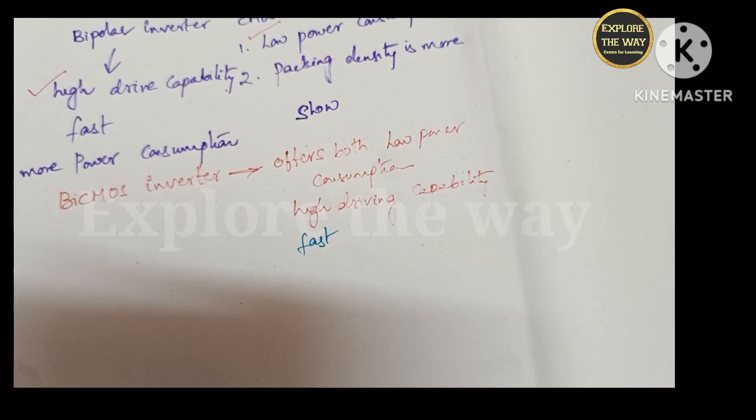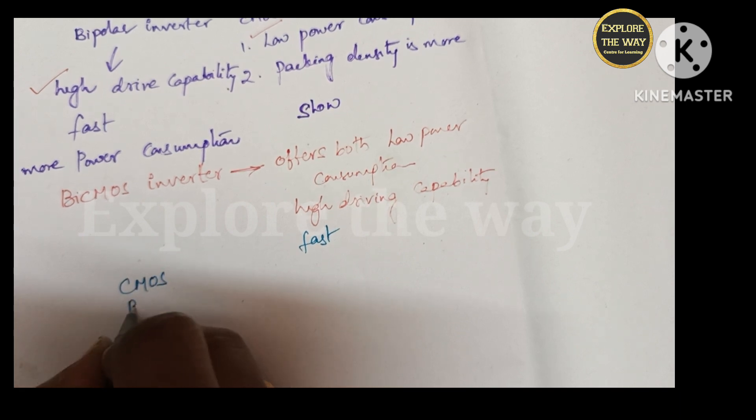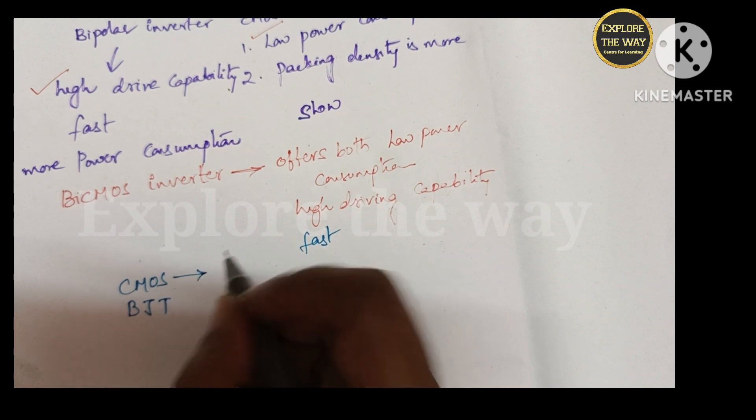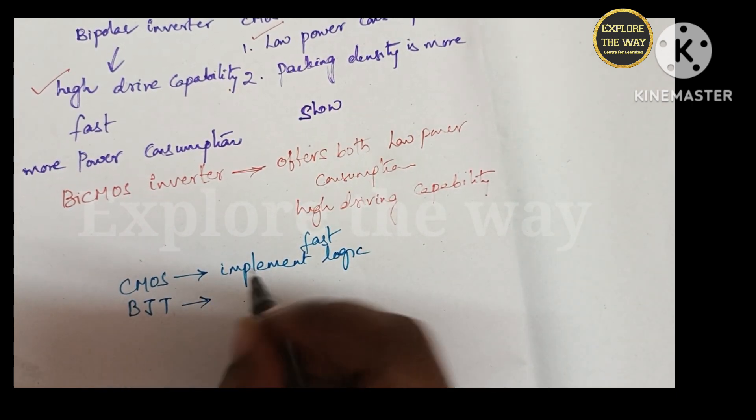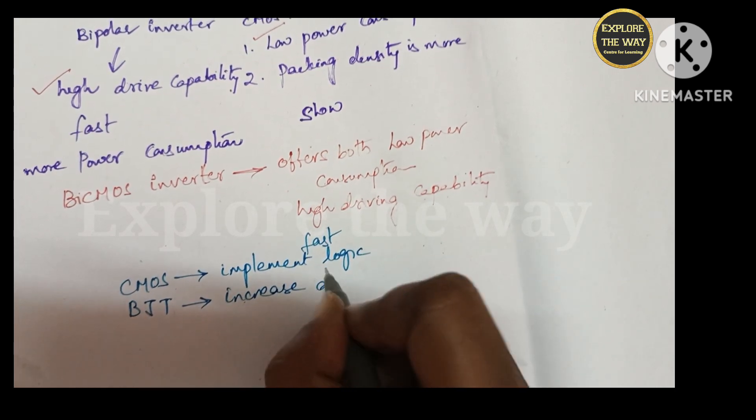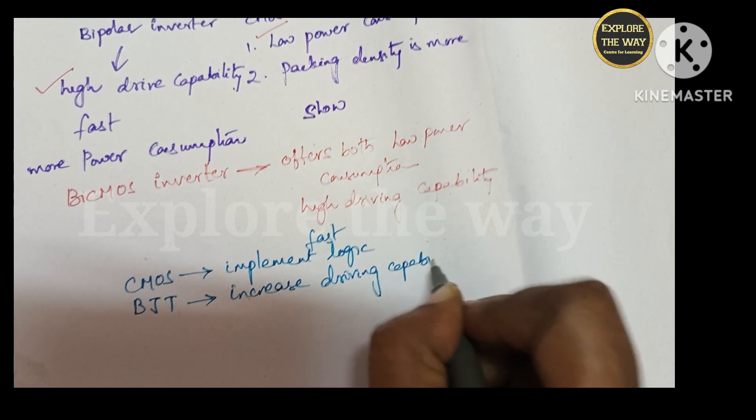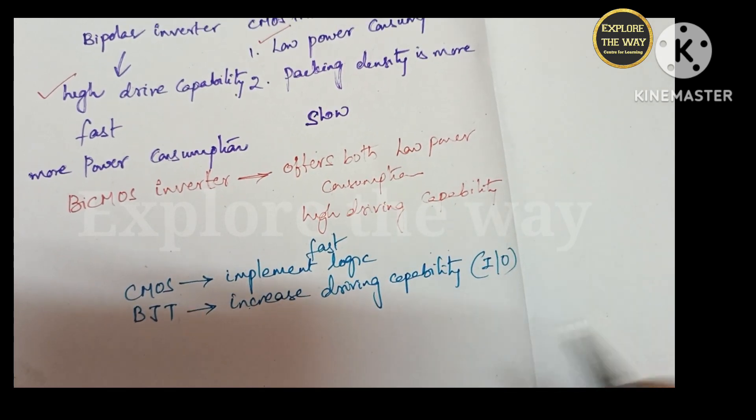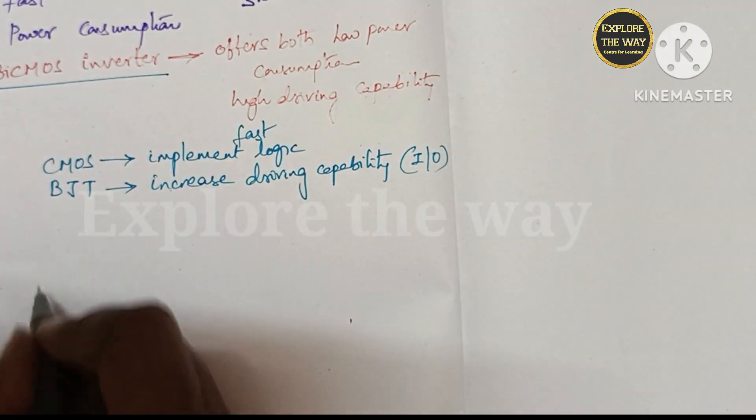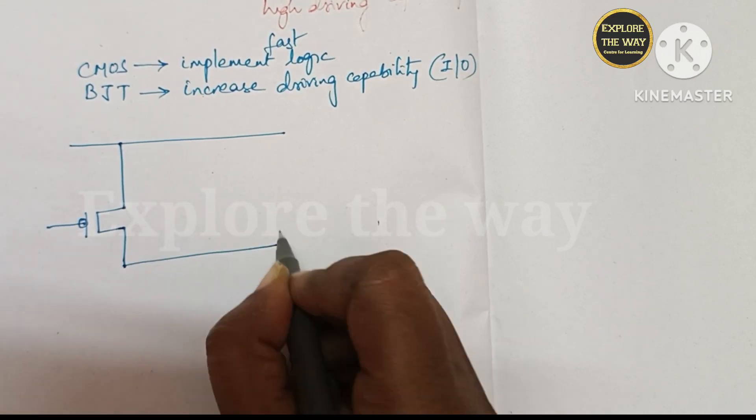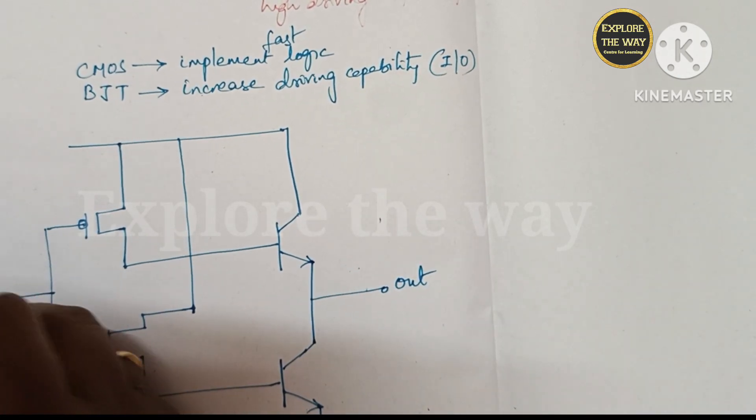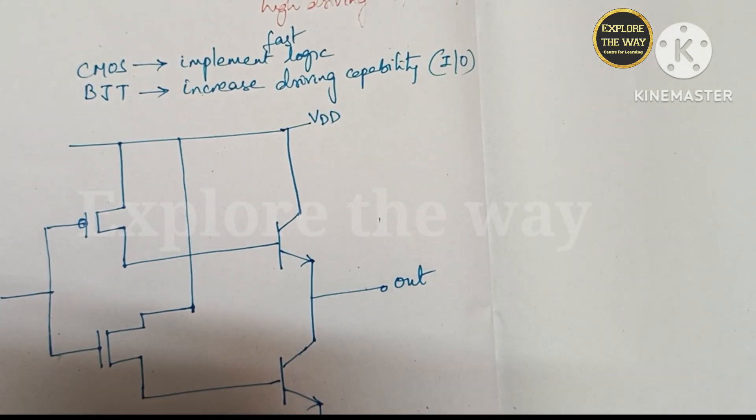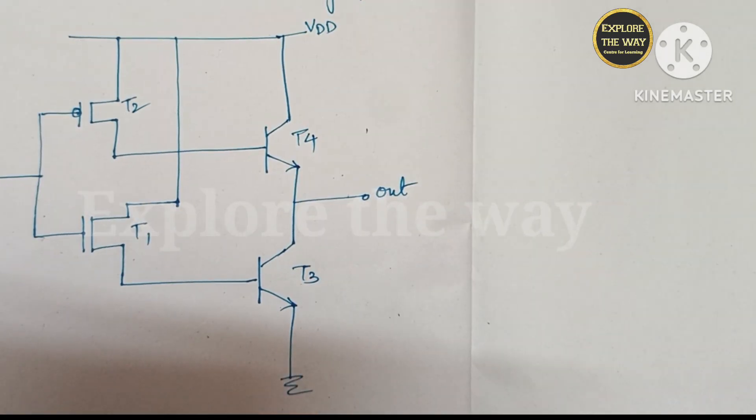Let us draw the schematic diagram for BiCMOS inverter. In BiCMOS inverter it uses both CMOS and bipolar transistors. So here CMOS can be used to implement logic and BJT is used to increase driving capability. This is the schematic diagram of BiCMOS inverter.